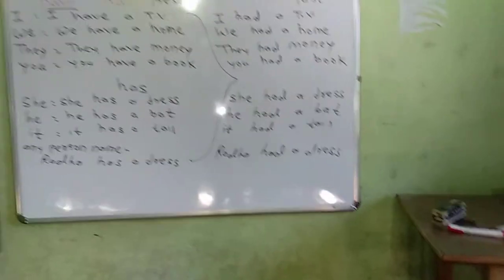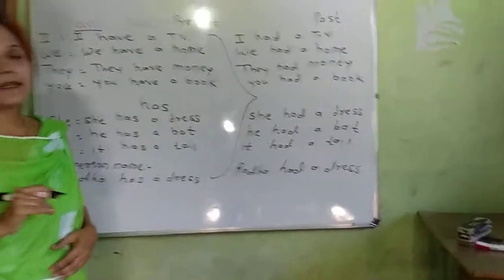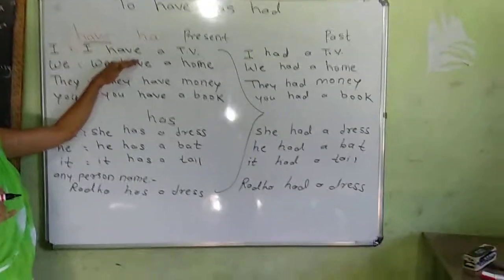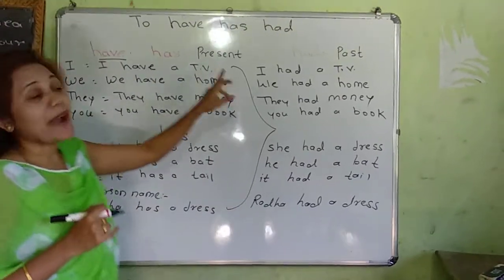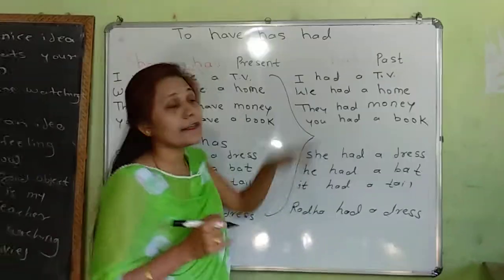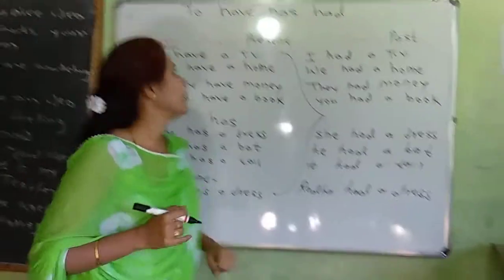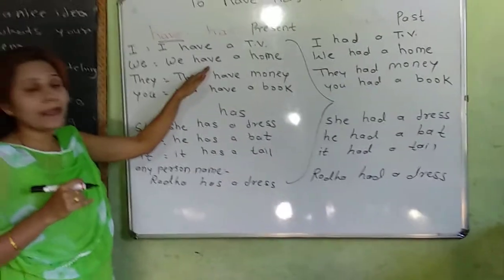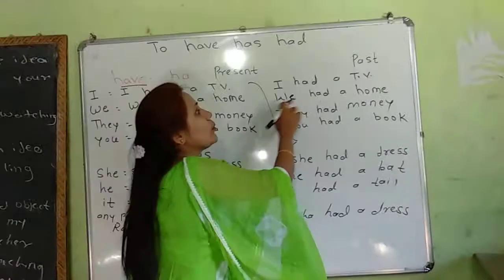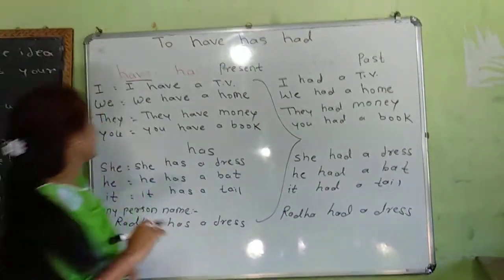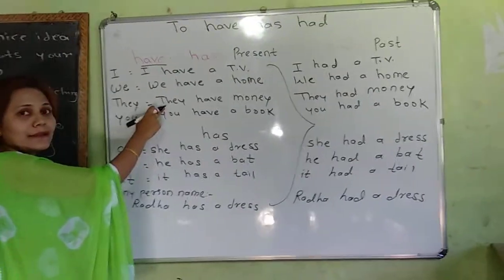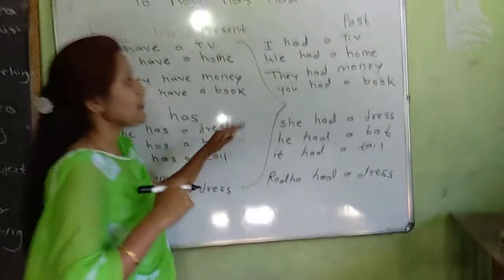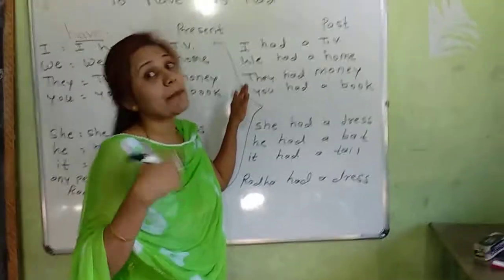Had is used in the past tense. For example: I have a TV — present tense. I had a TV — past tense. We have a home — past tense becomes We had a home. They had money — unke paas paise the. You have a home becomes You had a home in past tense.